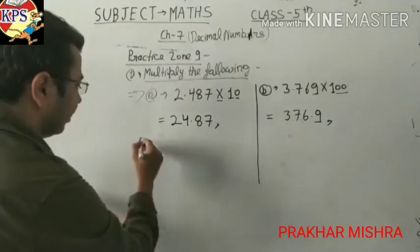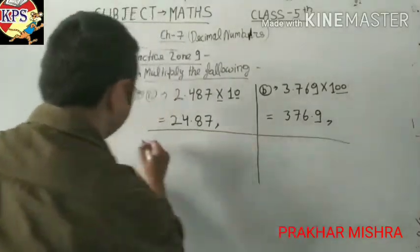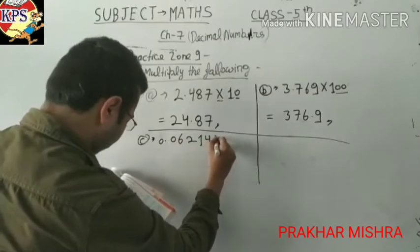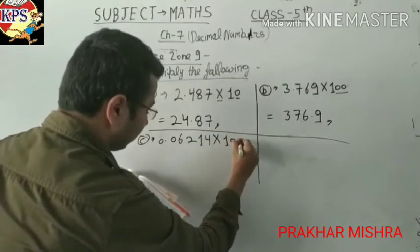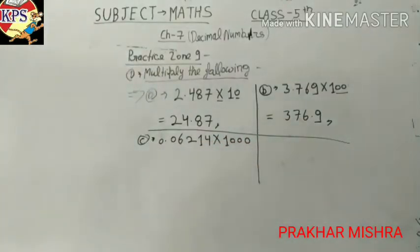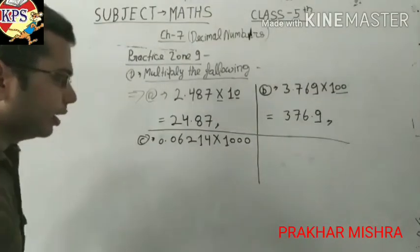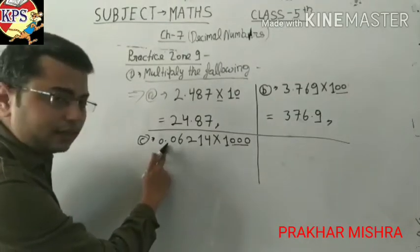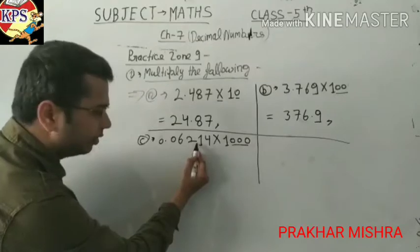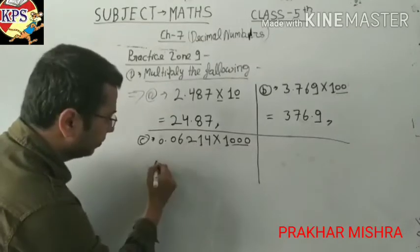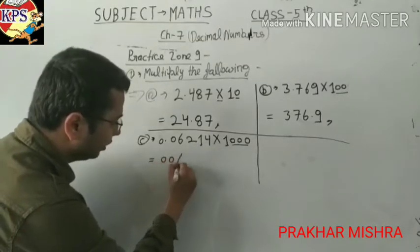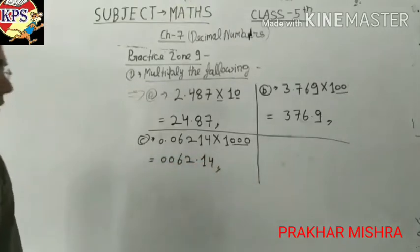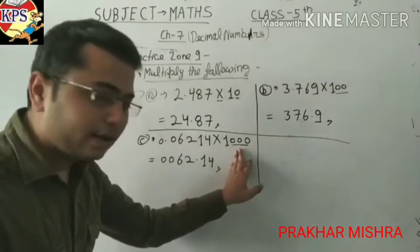In our next quotient — like in C number — one zero is given. There is a number like 0.0142 into 1000 is given. You can see three zeroes are given and the point is already here. So we will shift the point after three numbers — one, two, three — here. So we will write it like this, because three zeroes are given.